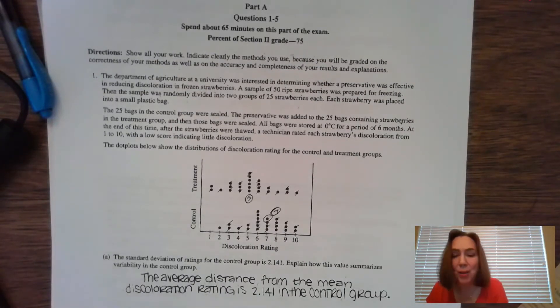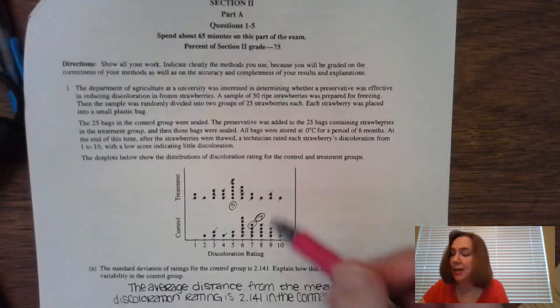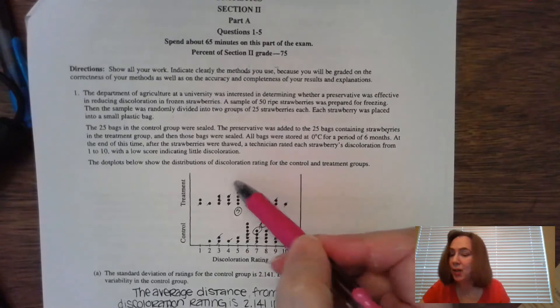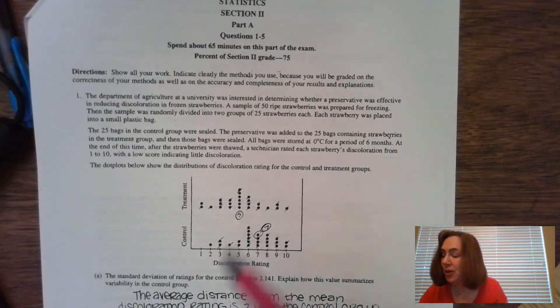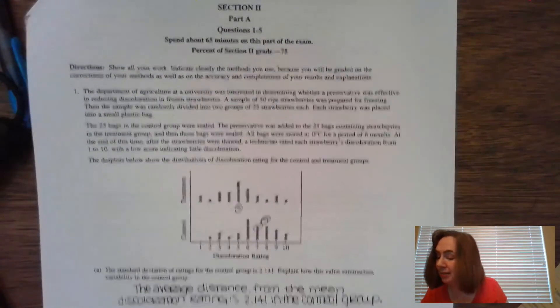We're going to take a look at question number one from the 2007 AP test, which is about strawberries. In this particular case, it's question number one again, and the biggest thing that you see right here is a dot plot. One's on top, one's on the bottom. They share the same scale. Title, label, label, tick, tick, tick. They sort of got it.